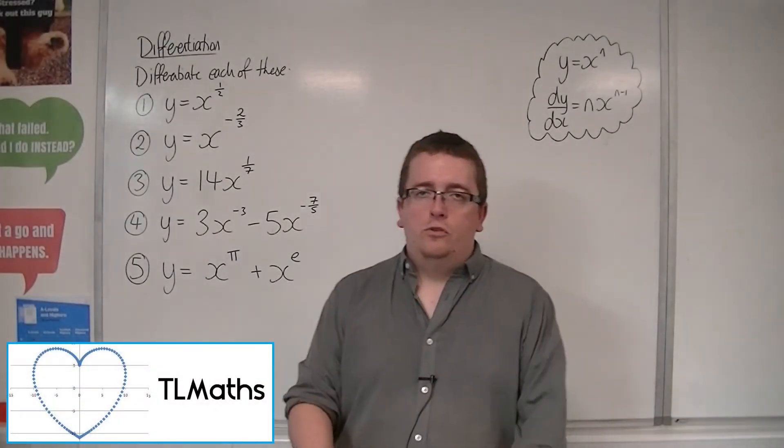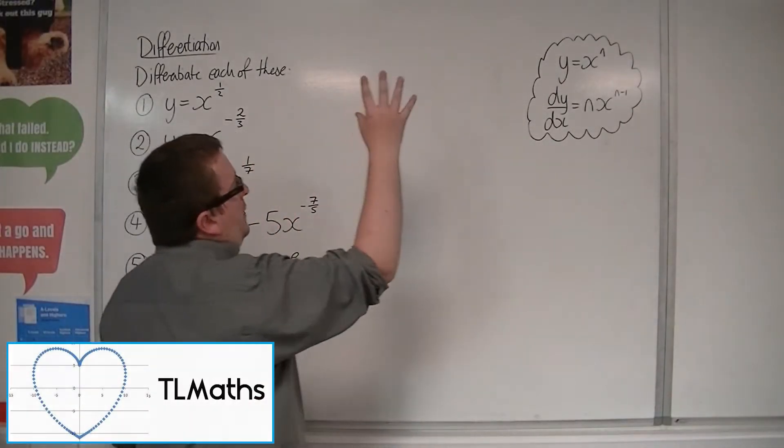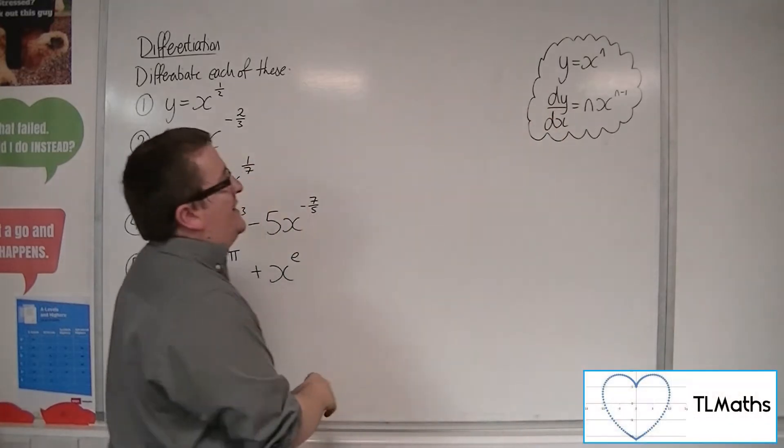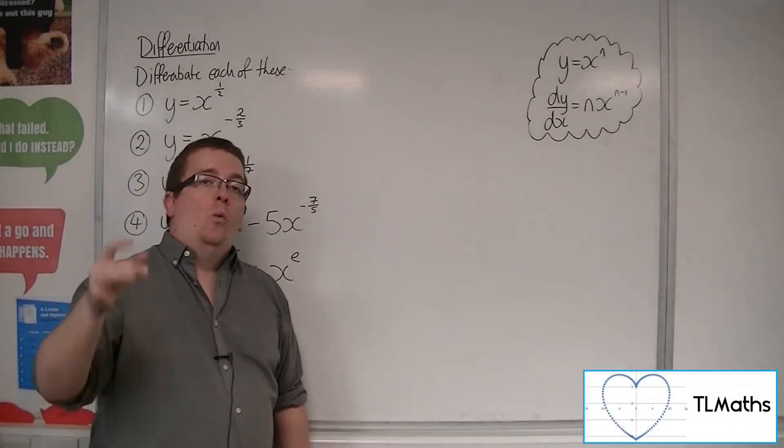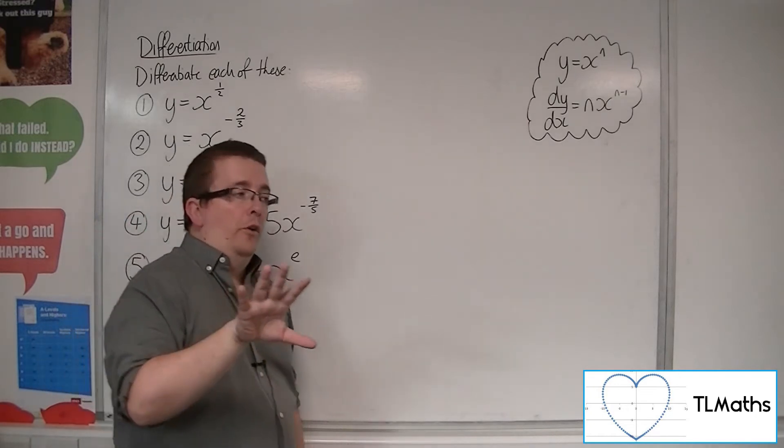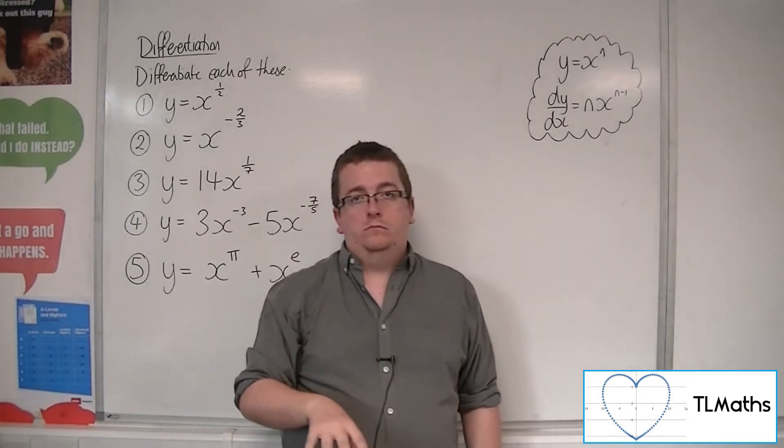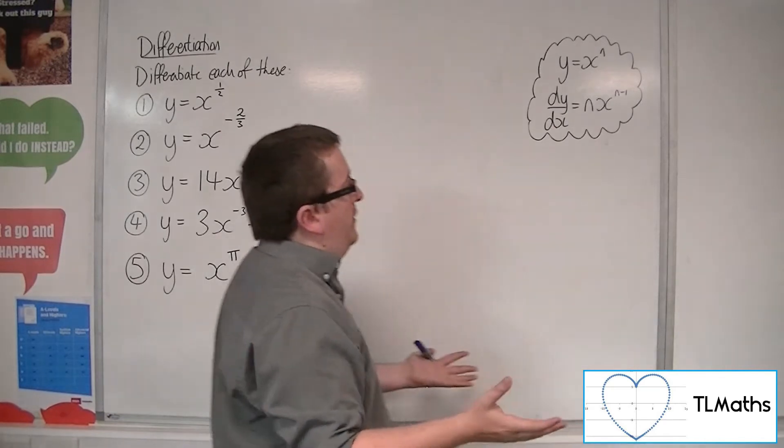Okay, so we've seen the proof that allows this to work. y equals x to the n, differentiating to n x to the n minus 1, where n was a positive whole number. Okay, so a positive integer.